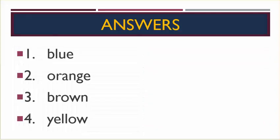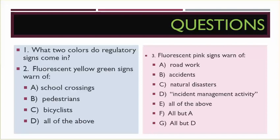Number four, what color gives you general warnings and advises of unexpected roadway conditions? Number one was blue. Number two is orange. Number three is brown. Number four is yellow. Number one, what two colors do regulatory signs come in?